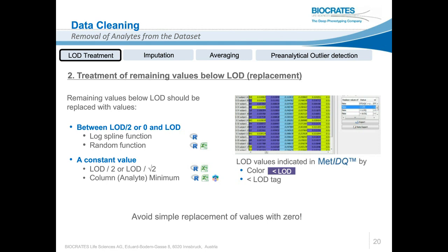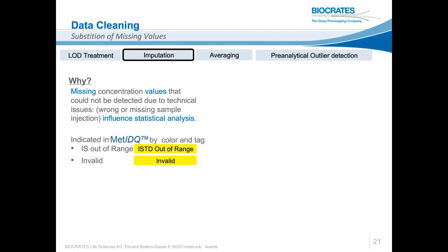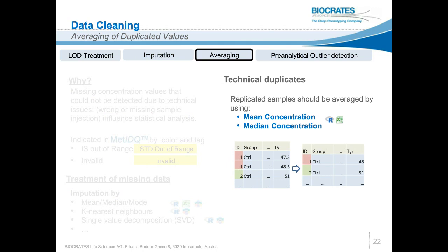Besides values below LOD, there could also be values missing due to other technical issues. Those may be imputed by values within the concentration range of the analyte — the status is indicated by color in the MetIDQ software. Strategies include using summary statistics such as the mean, median, or mode, or k-nearest neighbors or singular value decomposition methods. In case technical replicates are present, we suggest averaging them using the mean or median concentration.